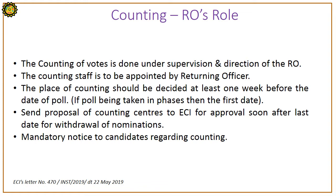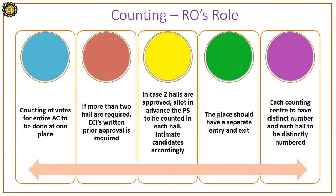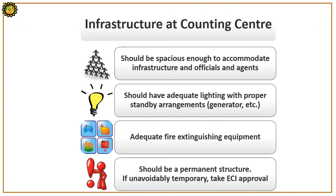Mandatory notice to candidates regarding counting is required. Counting of votes for the entire assembly constituency should be done at one place. If more than two halls are required, then ECI's written prior approval is required. In case two halls are approved, allot in advance the polling stations to be counted in each hall and intimate candidates accordingly. The place should have a separate entry and exit. Each counting centre should have a distinct number and each hall should be distinctly numbered.